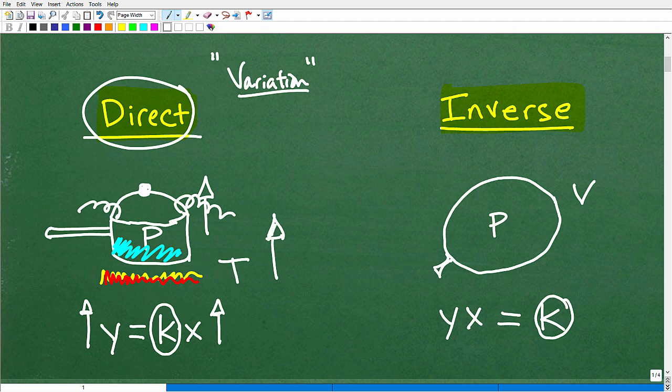But algebraically speaking, you can see that if I increase the value of x, if I make this a larger number, my y is also going to go up. Okay? So just like our example here, if I increase the temperature here on the stove, my pressure in my pot is going to go up directly. Okay? So this has a direct correlation, direct variation.